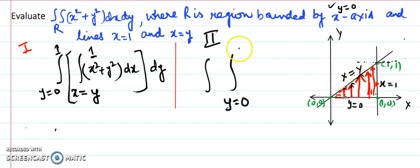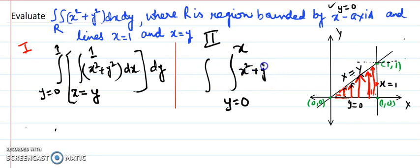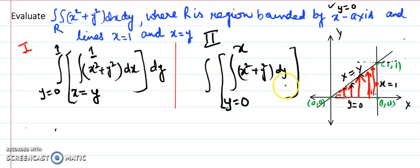So the integration with respect to y of x squared plus y squared runs from y equals 0 to y equals x. Once this inner integration is done, the outer integration is performed with respect to x.